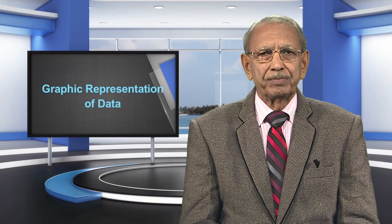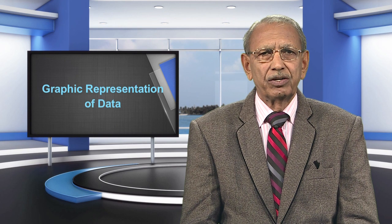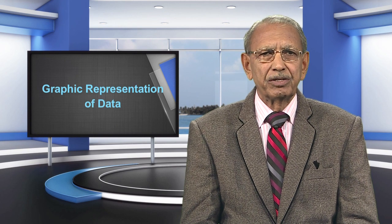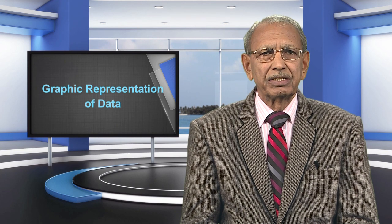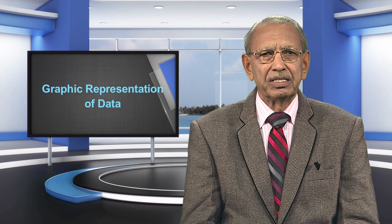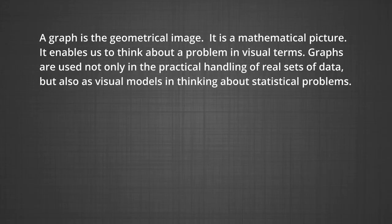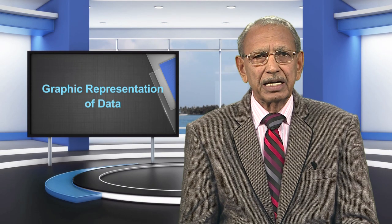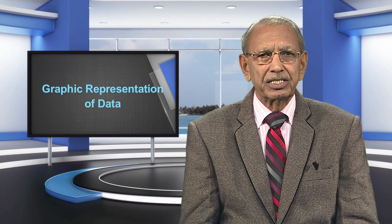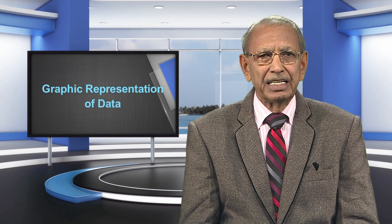The tabular presentation of data and the rules of construction were explained in the preceding module. When tabular representation is converted into graphic shapes, the data becomes easier and more convenient to understand. A graph is a geometrical image — a mathematical picture. It enables us to think about a problem in visual terms, and is used not only in handling real data sets but also as a visual model in thinking about statistical problems. Many problems can be reduced to visual form, and such reduction often facilitates understanding and solution.